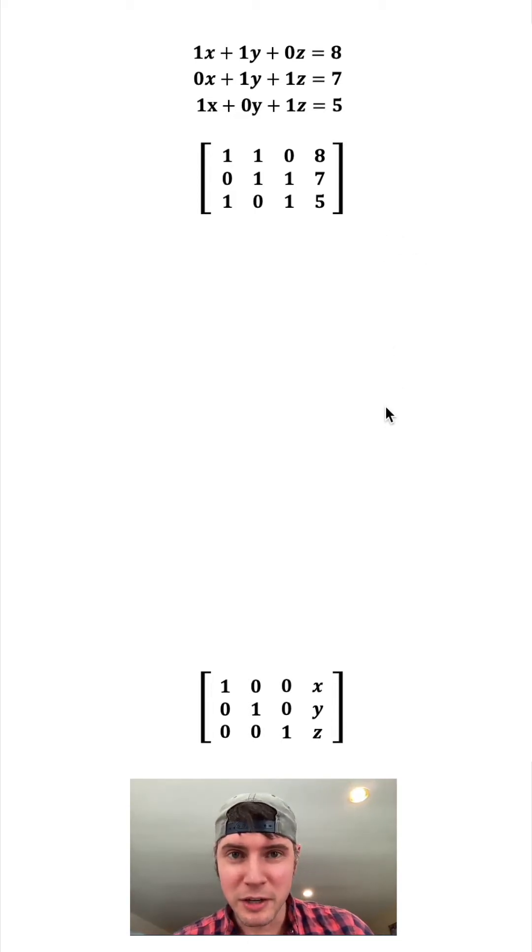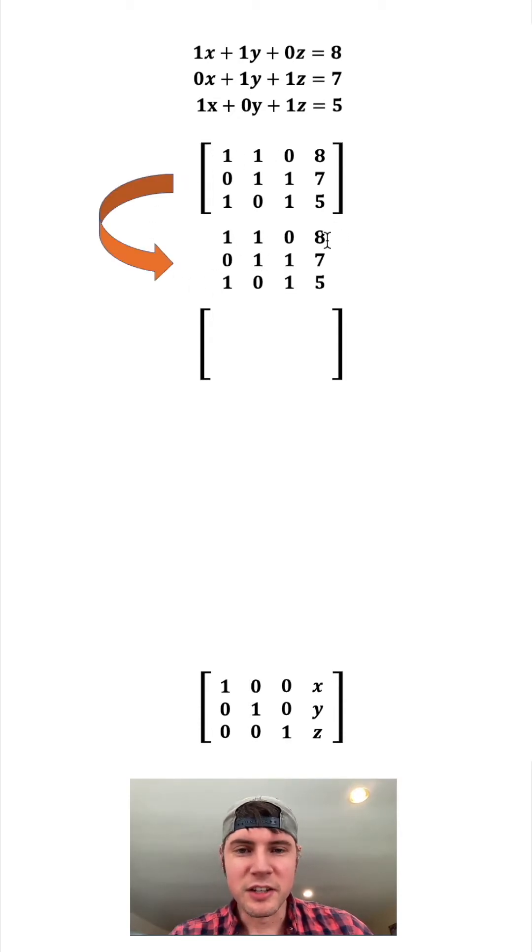The way we make this happen is we're going to make manipulations one row at a time. I'll show you how it looks. To fill our next matrix, let's copy all this stuff down. We're going to take this first row right here, subtract the second, and add the third, and that's going to be our new row 1.